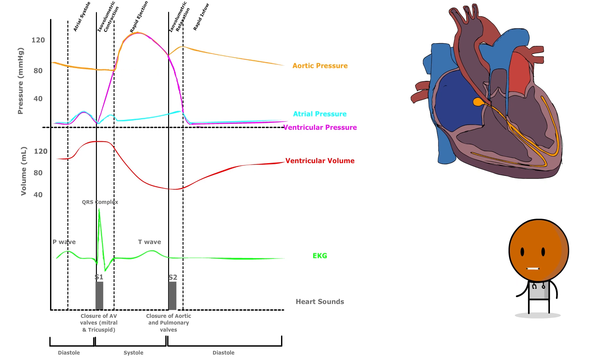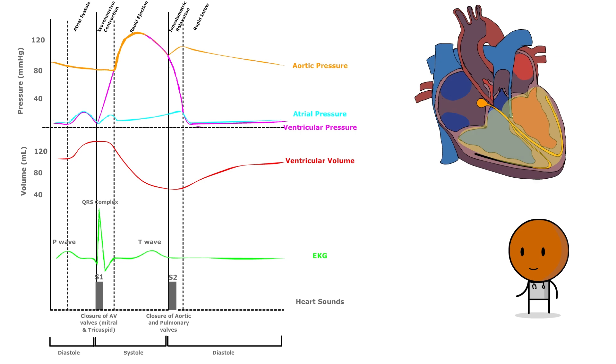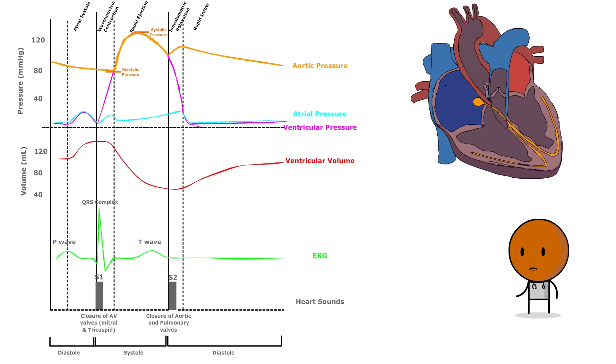In summary, the aortic pressure curve would show a sharp increase during ventricular ejection, a peak corresponding to systolic pressure, followed by a gradual decline to the diastolic pressure before the cycle repeats.